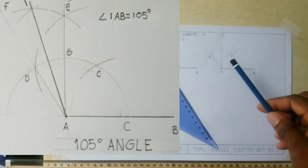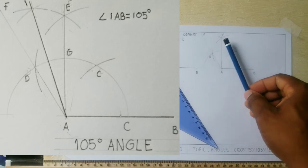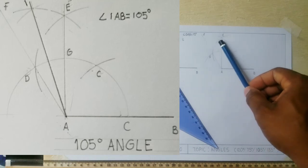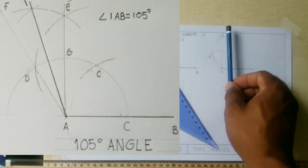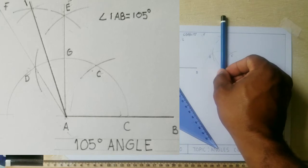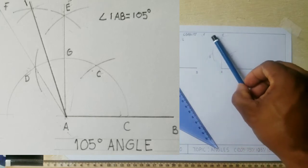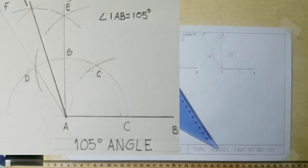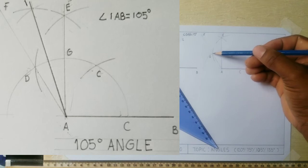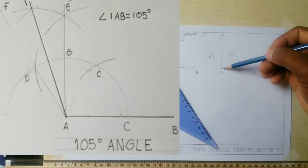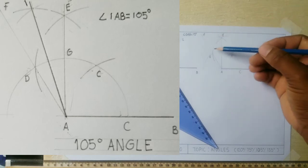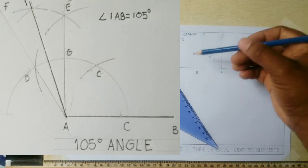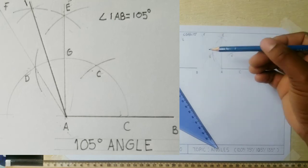Now if we can add 15 degrees to EAB, moving this line from this position to the midway point here, then we would have gotten our 105 degree angle. Now what we will do is that we will bisect FAE, which is a 30 degree angle, to get two 15 degree angles.